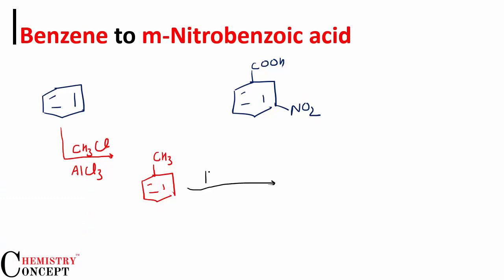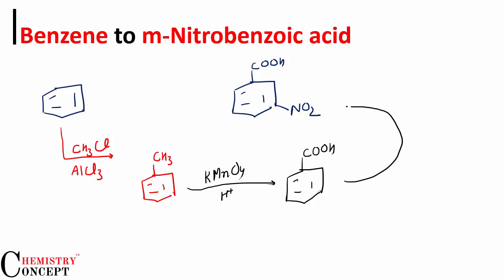Then treat it with KMnO₄ in presence of acid. As we know, irrespective of the carbon chain length, it will convert into a carboxylic acid. Then carry out nitration by treating with concentrated HNO₃ and concentrated H₂SO₄ to get the meta product, because the carboxylic acid group is a meta-directing group.